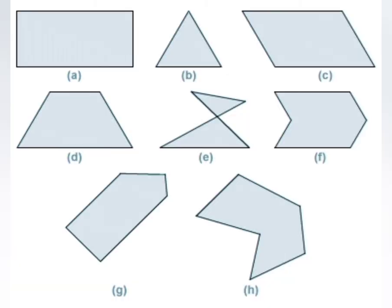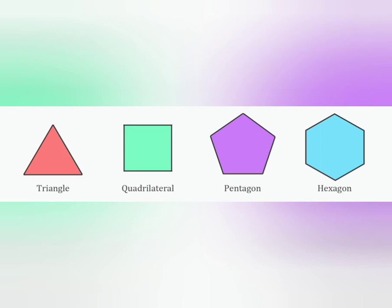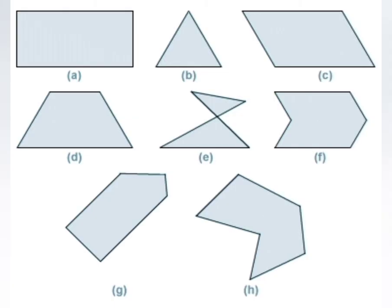Regular polygons have equal sides and equal angles. Irregular polygons have different sides and different angles. More about these you will be learning in the higher classes. Now, coming to regular polygons and its sides.